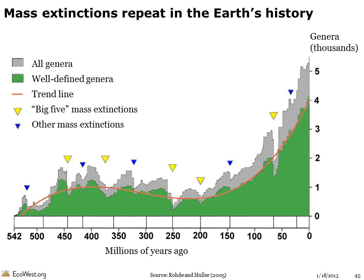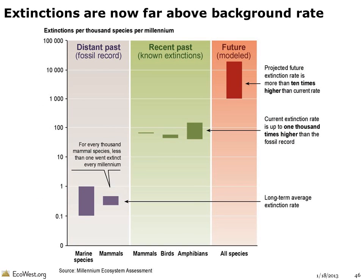We know from the fossil record that more than 99% of the species that have ever inhabited the planet are gone forever. Scientists have identified five mass extinction events in Earth's history, the most recent occurring about 65.5 million years ago, when an asteroid struck near the Yucatan Peninsula and three-quarters of the planet's species died out. Many researchers believe we are in the early days of the Earth's sixth great extinction event, with some scientists predicting that one-third or more of all species will be gone or doomed by the end of the 21st century if emissions of heat-trapping greenhouse gases continue to increase.